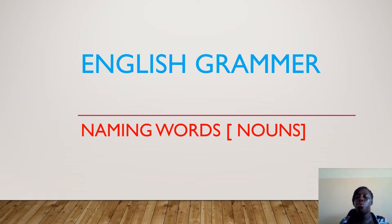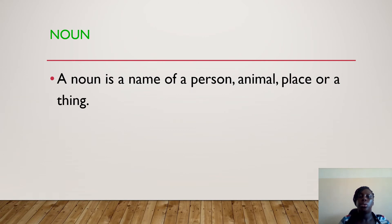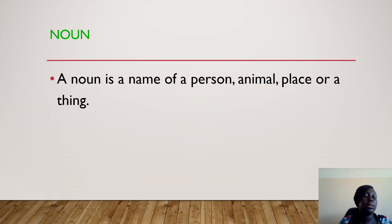Before we start, hope you are all doing well — your parents, hope by God's grace they are all doing well. As I started earlier, we have English grammar and we have naming words which is noun. In our own words, noun is the name of a person, animal, places or a thing. It's a naming word. So anything that has a name is a noun.